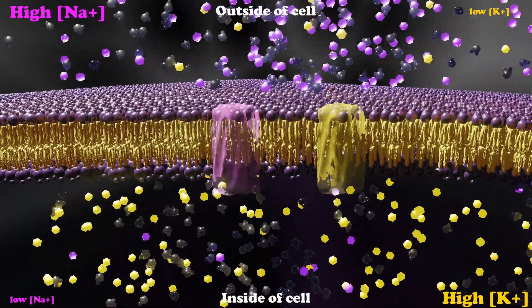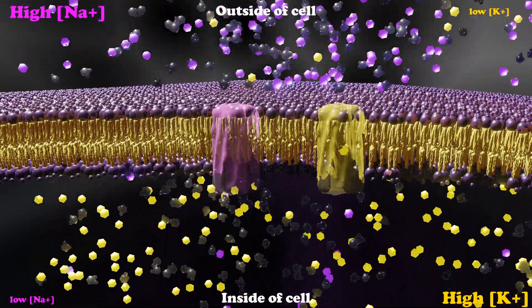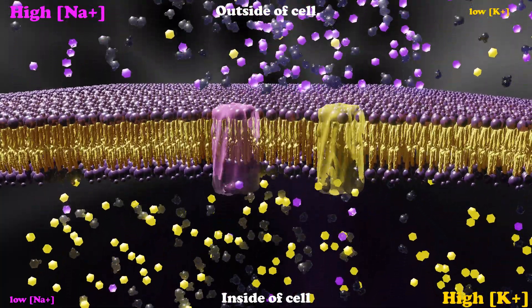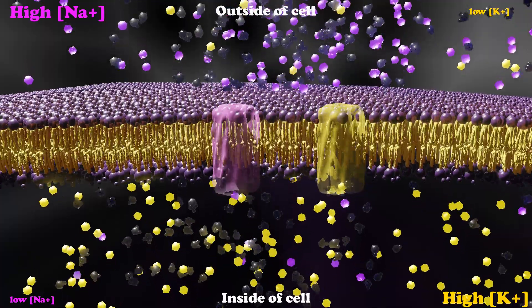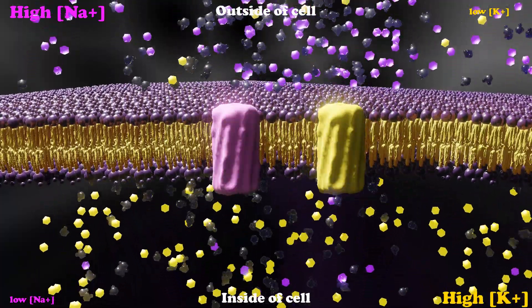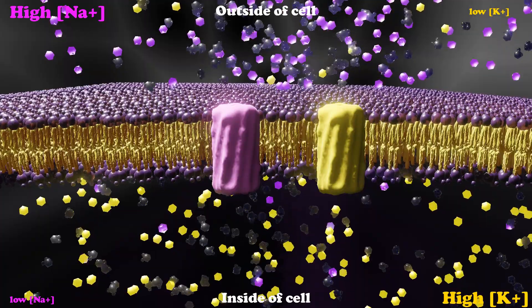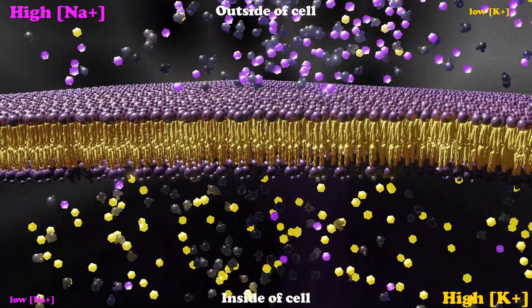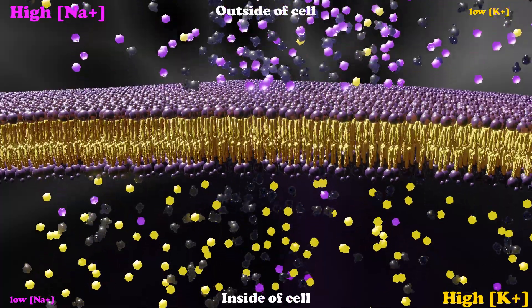However, most of our cells actually want to keep a high concentration of sodium on the outside of the cell and the low concentration of potassium on the outside of the cell, because this is going to set up a normal environment for something called a membrane potential, which we'll get to in a future video.